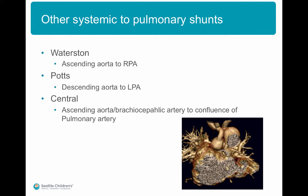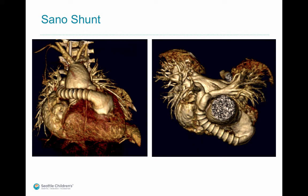The central shunt is still currently used for several indications. The Sano shunt is an example of an RV to PA shunt, extending from the free wall of the right ventricle to the confluence of the pulmonary artery, similar to the central shunt. Unlike the central shunt, the other systemic pulmonary shunts cause a wide pulse pressure due to steal of blood flow to the pulmonary bed during diastole, leading to a significant drop in diastolic blood pressure. The RV to PA shunt avoids that due to the right ventricular pumping action.